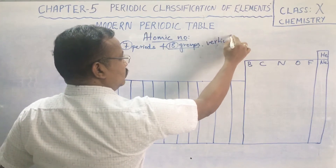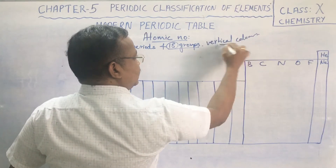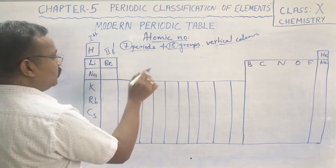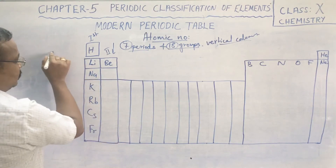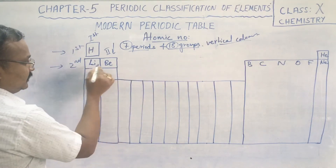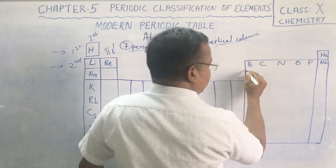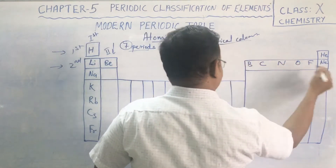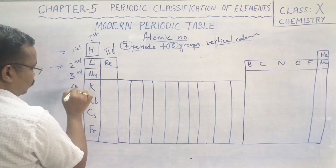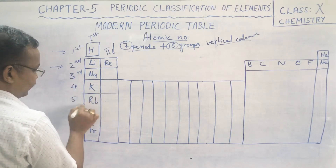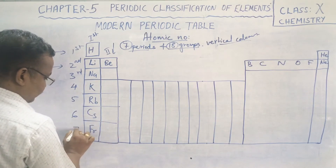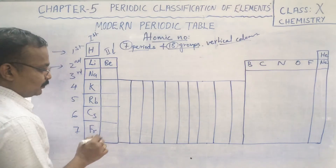There are seven horizontal rows called periods. This is the first period, this is the second period — lithium, beryllium, boron, carbon, nitrogen, oxygen, fluorine. The third period starts with sodium, the fourth period with potassium, the fifth with rubidium, the sixth from cesium onwards, and the seventh period starts from francium.